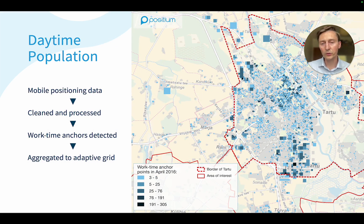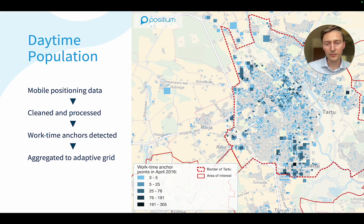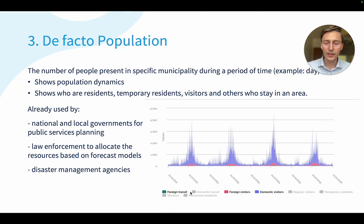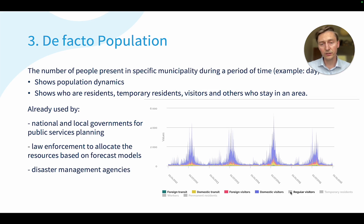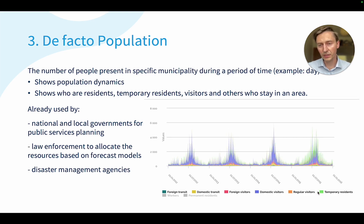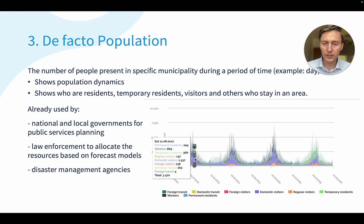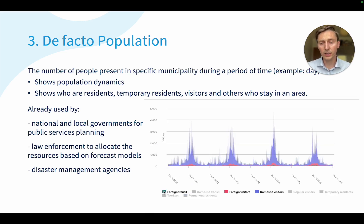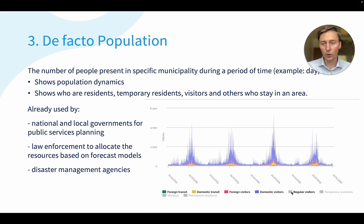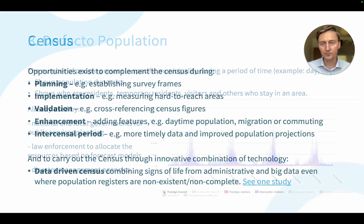Where do people spend their days, especially during working time? We can clean and process the data to detect work-time anchors and aggregate this to a grid or municipality level to understand the number of people at work on any given day. We can also look at population dynamics within a specific hour or 15-minute window at a certain location — information that is very useful for public service planning, law enforcement resource allocation, and disaster management agencies.